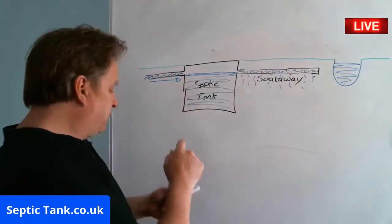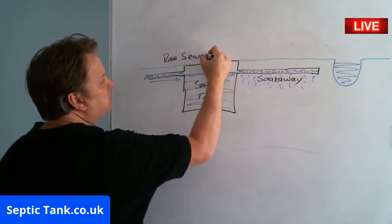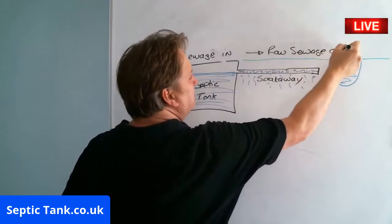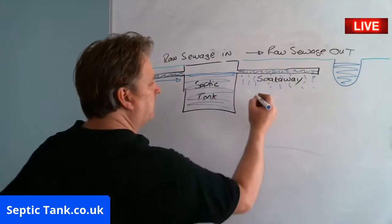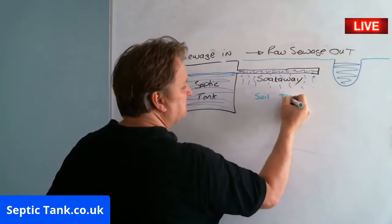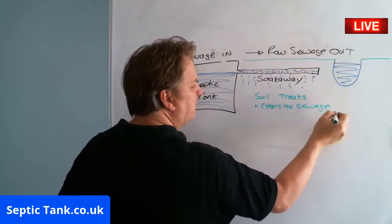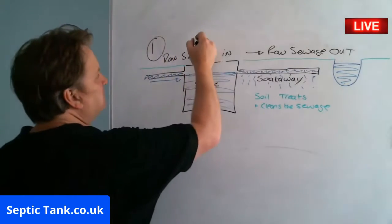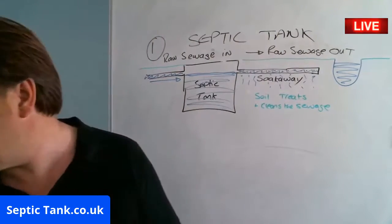So the basic difference with a septic tank is: raw sewage goes in and raw sewage comes out. The soil treats and cleans the sewage. That's number one — the septic tank.